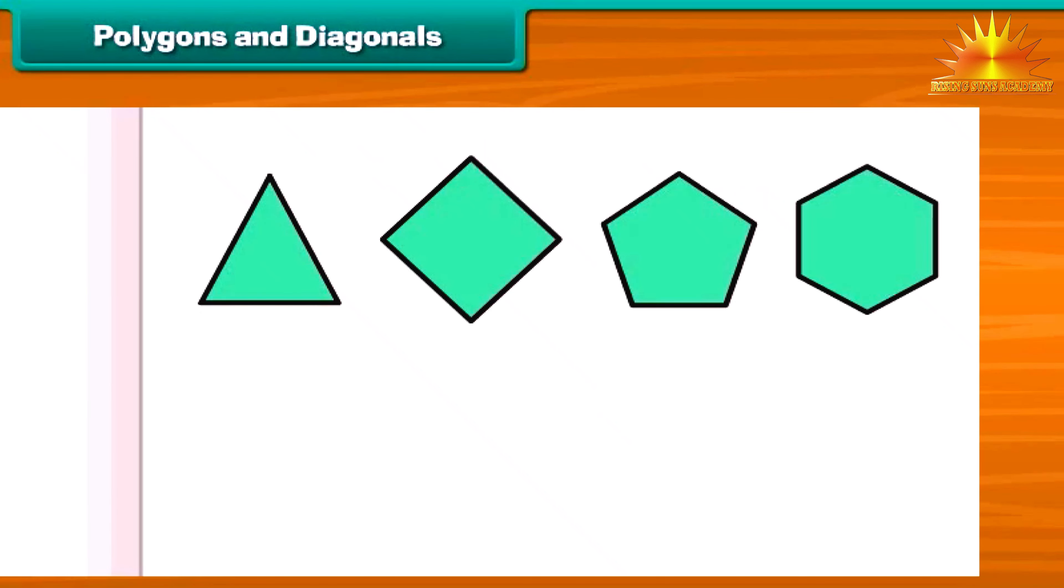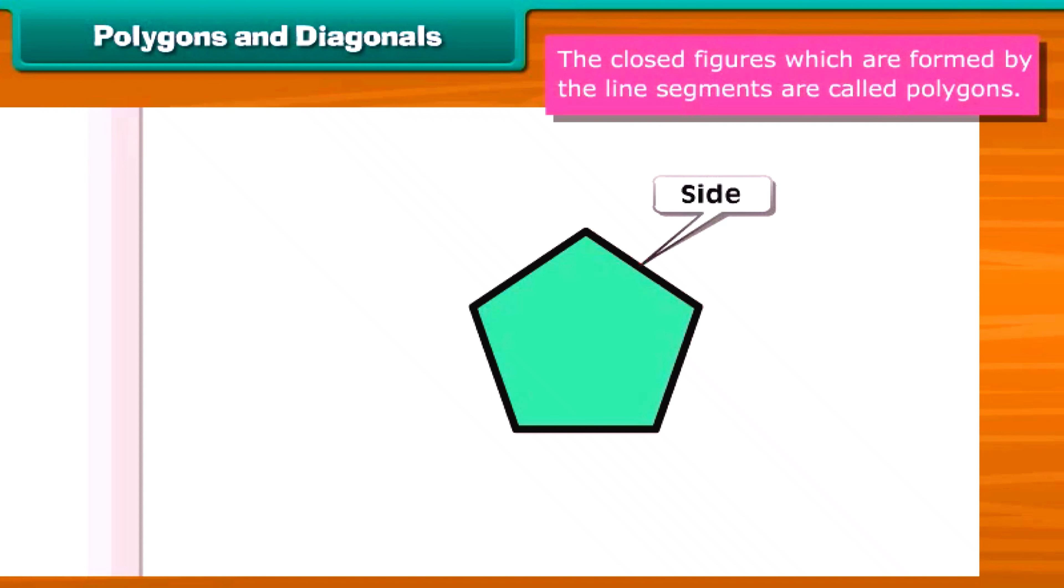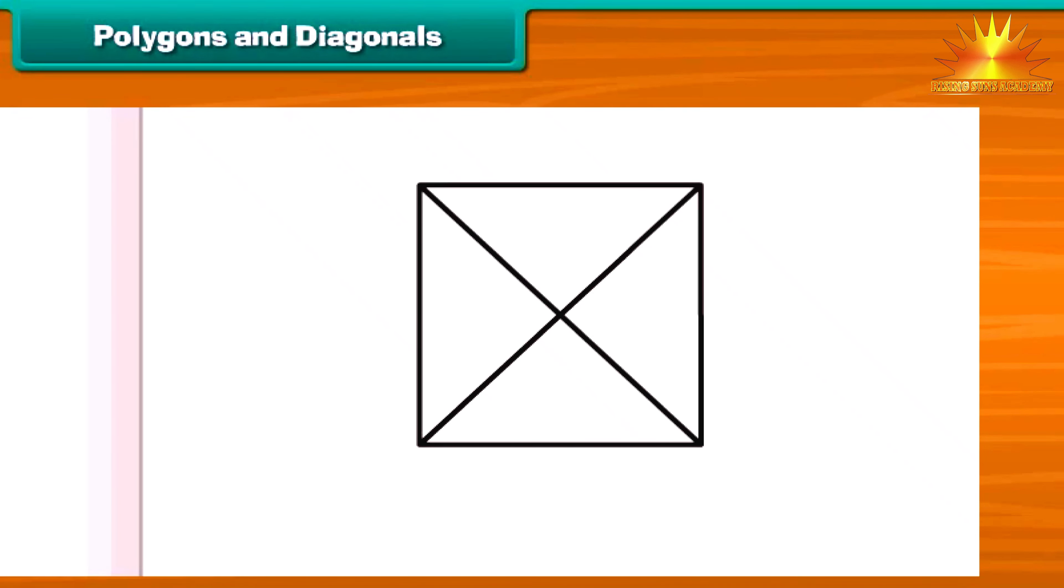Look at these closed figures. These are formed by the line segments. The closed figures which are formed by the line segments are called polygons. The line segment of a polygon is called its side. The point where two line segments meet is called its vertex. What will you call these line segments? The line segments drawn from one vertex to another vertex are called diagonals. A side of a polygon is not a diagonal.